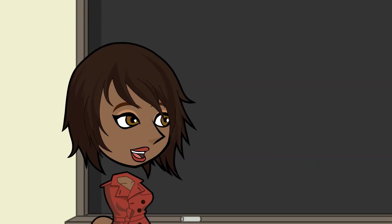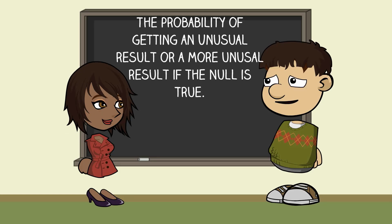So, tell me again how you define the p-value? It is the probability of getting a very unusual result, or an even more unusual result, if the null hypothesis is true. The more unusual part bothers me a bit. I know, that part is a little fuzzy. I'll explain why that part is true in more detail in the next video.